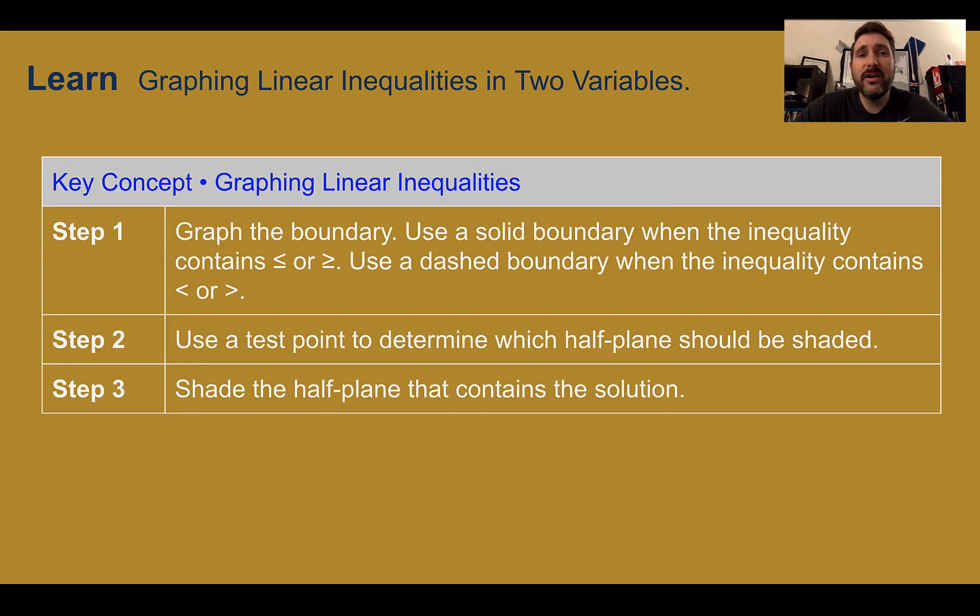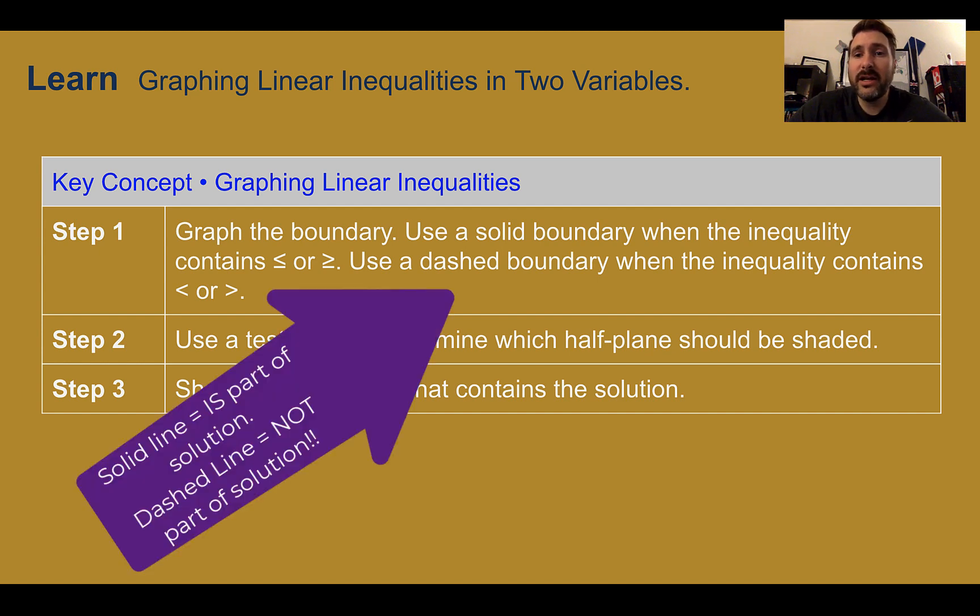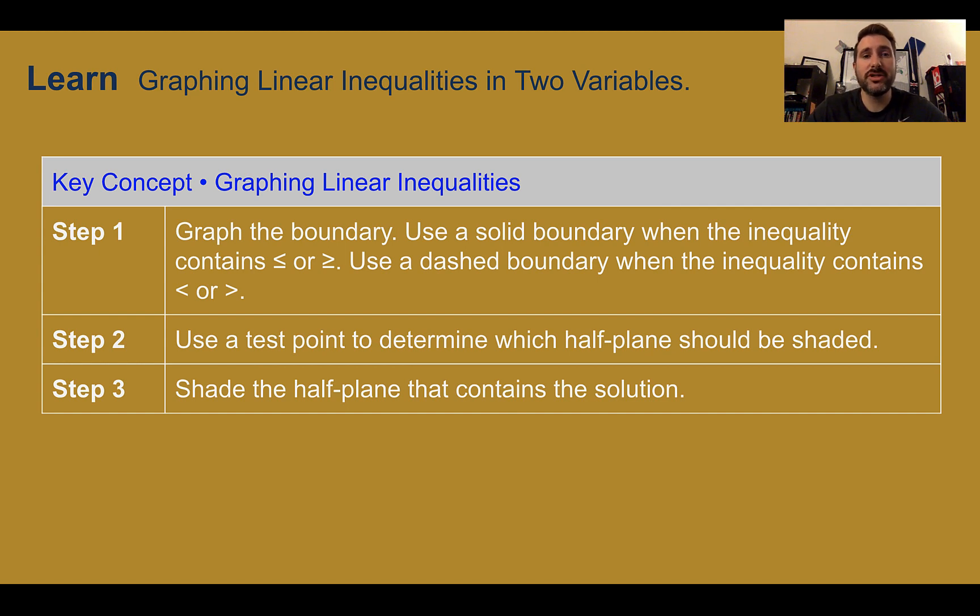Our key concept here is graphing linear inequalities. So first step, we're going to graph the boundary. It's going to be a line just like we learned about in modules four and five. We're going to use a solid boundary for that line when the inequality is greater than or equal to or less than or equal to. We're going to use a dashed boundary when an inequality contains just greater than or less than, similar to the open circle. Then, once we've graphed our line as our boundary, we're going to use a test point to determine which side, which half-plane, we should shade. And then we're going to shade the half-plane that contains the solution. Shading here is similar to drawing the arrows.